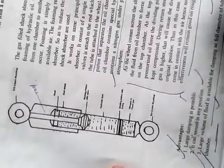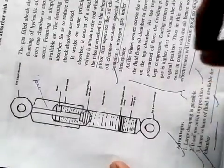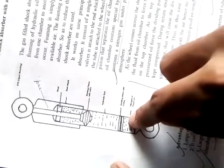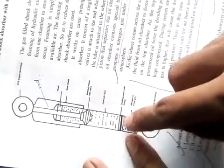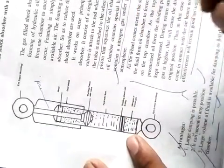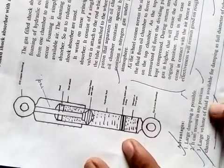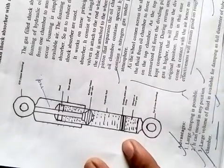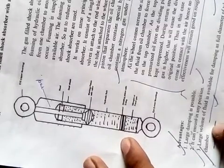The advantages are: high damping is possible because it is 25 times higher in pressure than atmospheric pressure, it can be mounted in any position, and large volume of fluid is available for damping as the full diameter of tube can be used as working chamber.